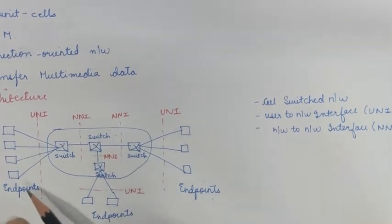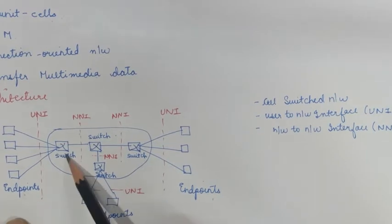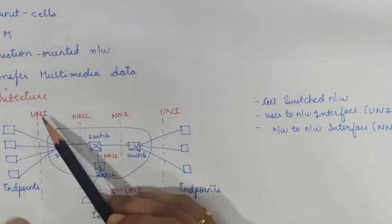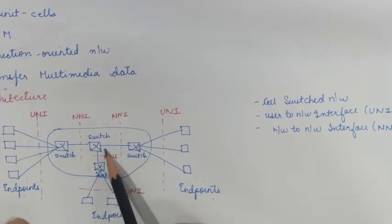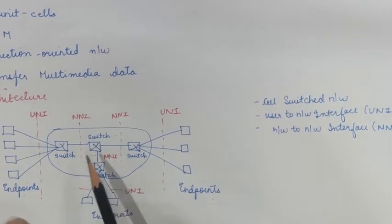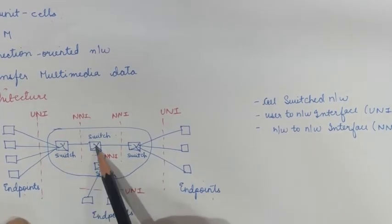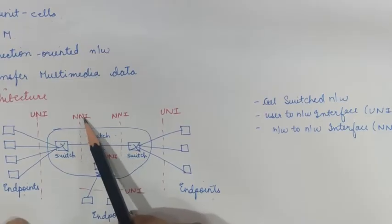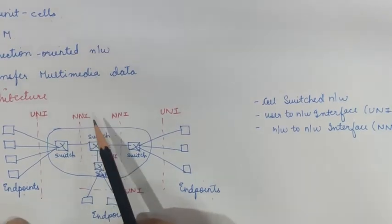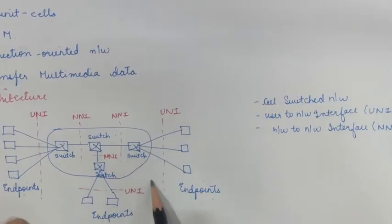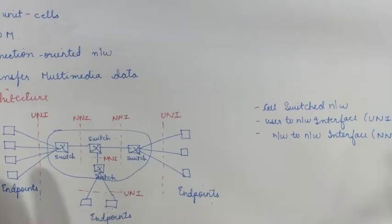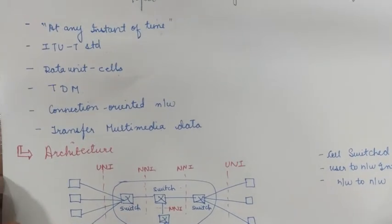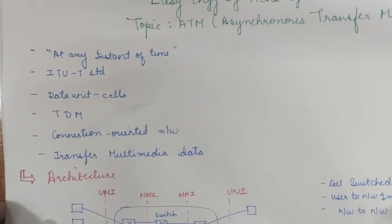Simply put, whatever endpoint is going to be connected to a switch — the interface between these two is the User-to-Network Interface. In the network, one switch can be connected to another switch, and the connection between them happens through the Network-to-Network Interface. This simple architecture makes it easy to understand how ATM components are interconnected.